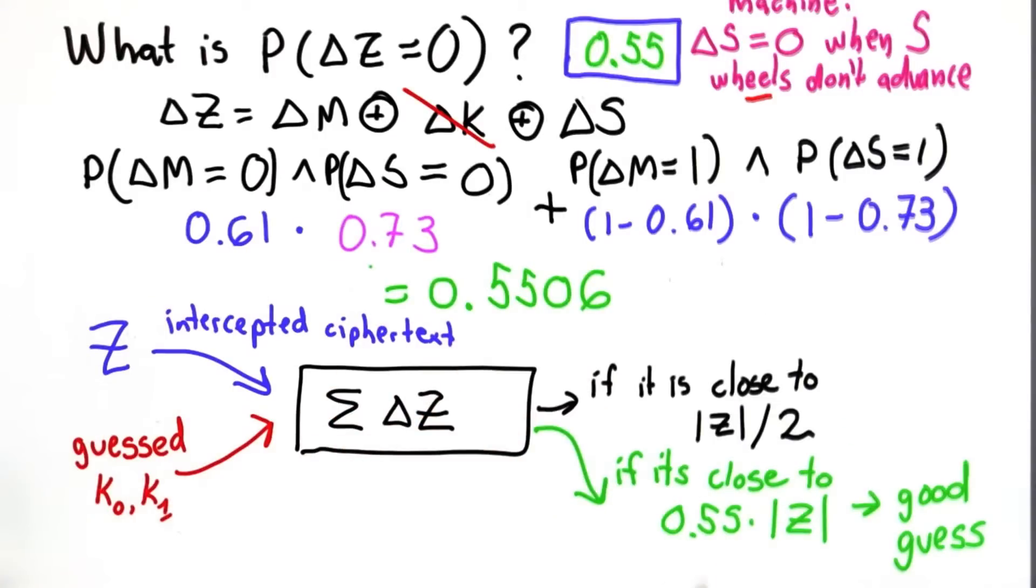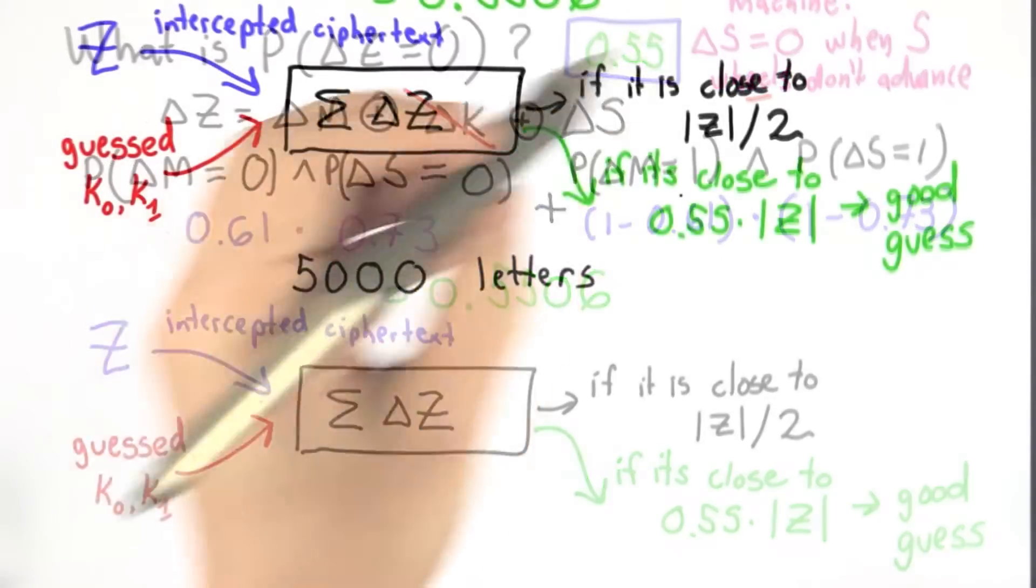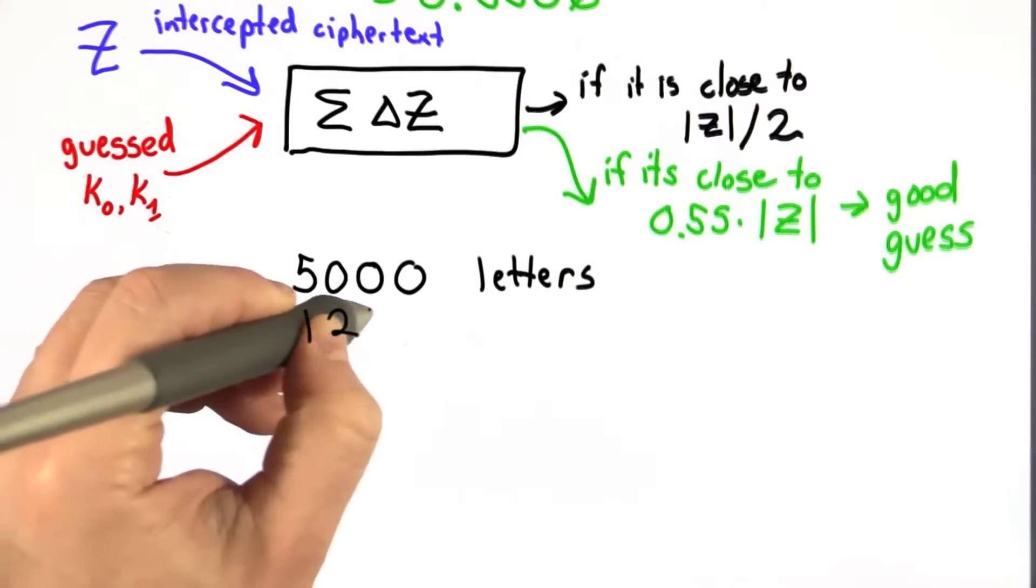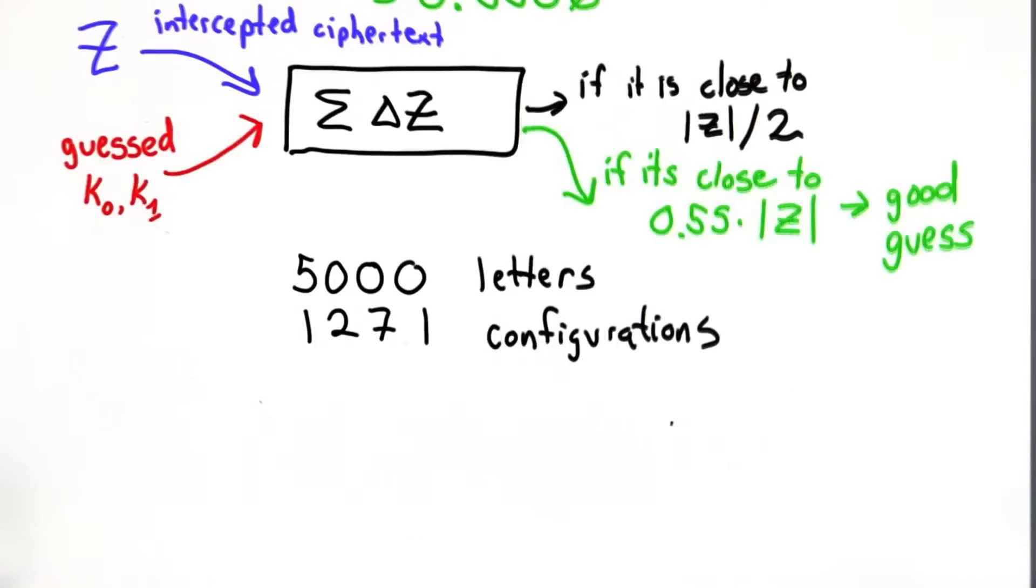So with this advantage, there's a good likelihood that you would be able to know when you guessed the right key. You need to try all the configurations of K0 and K1, and for each one of those configurations...